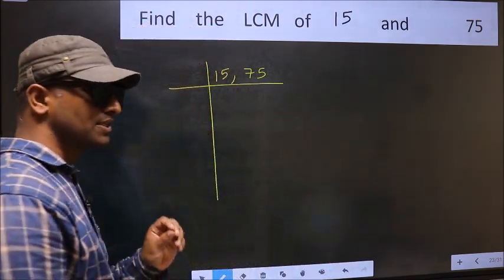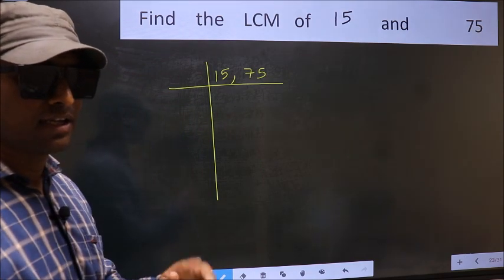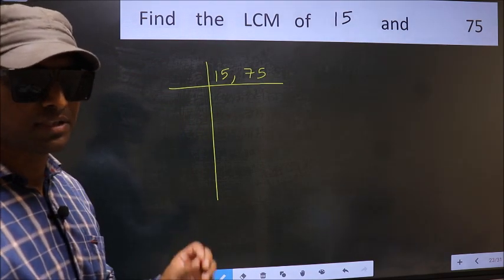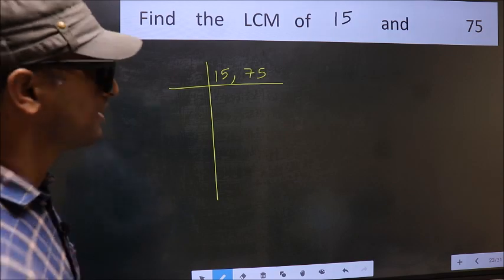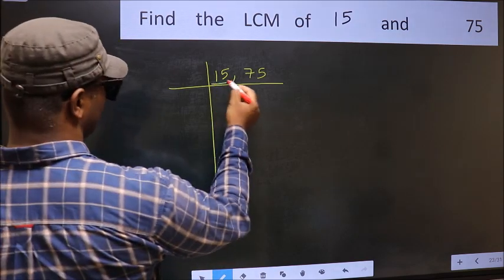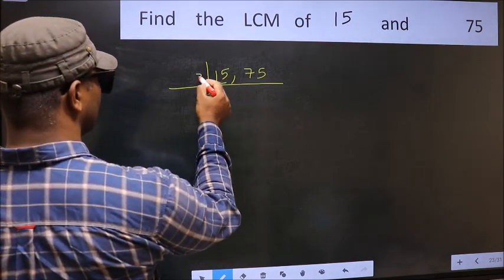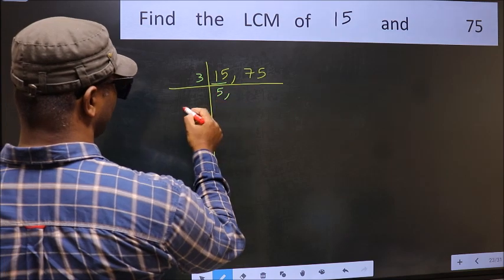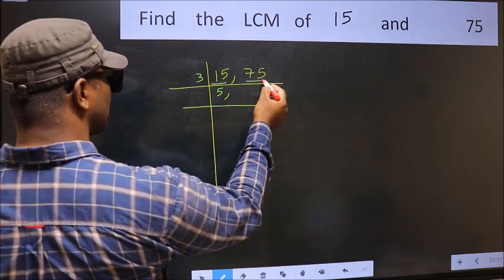This is your step 1. Now you should focus on the first number which is 15 here. 15 is 3×5=15. The other number is 75.